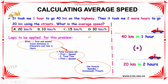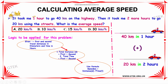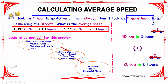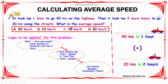The logic to be applied for this problem is: first of all, we need to identify the given data. The given values are the first and second travel distances in kilometers and the time in hours.